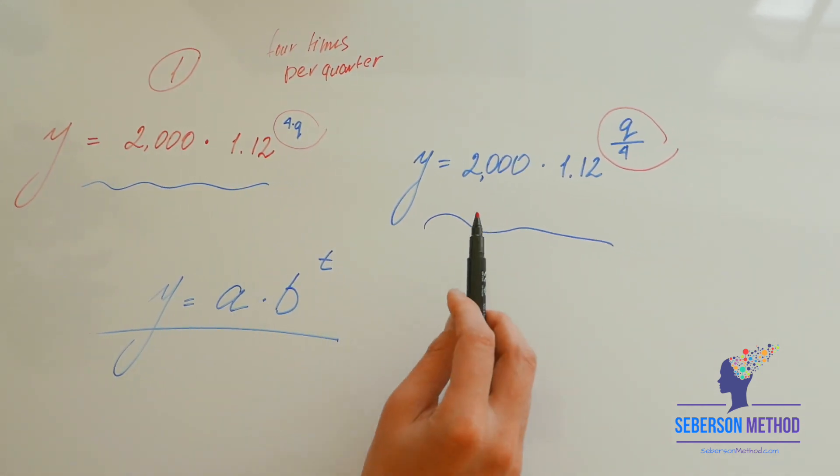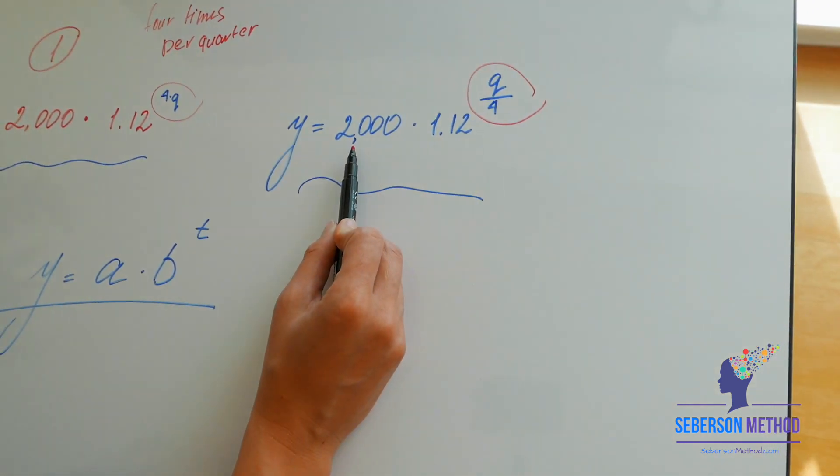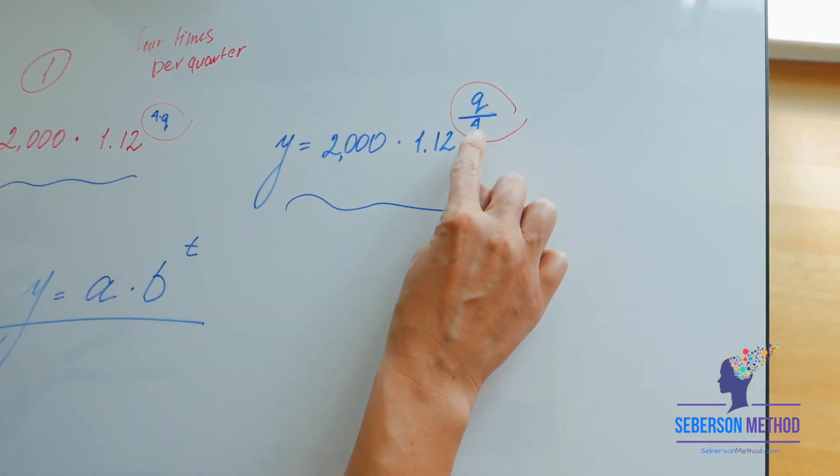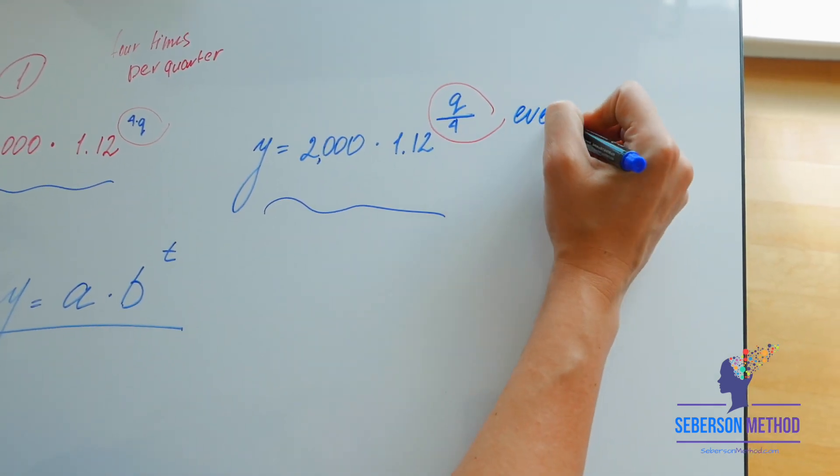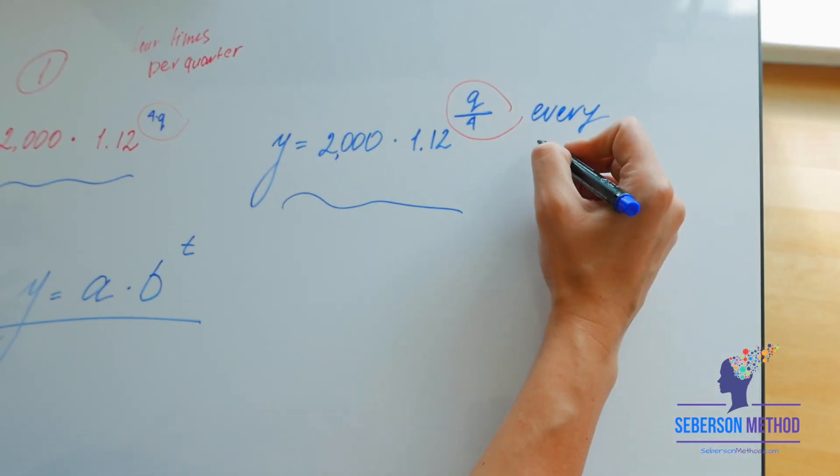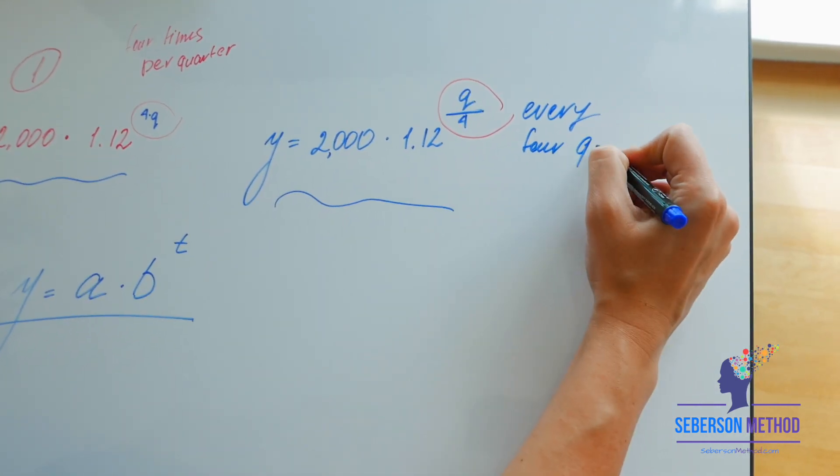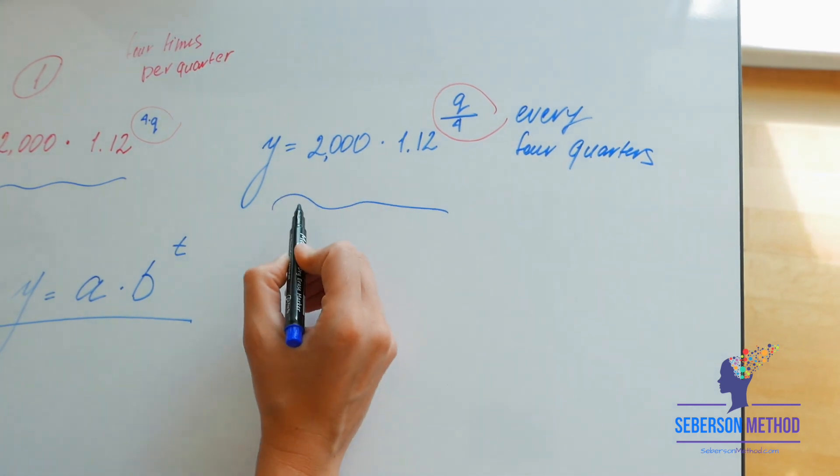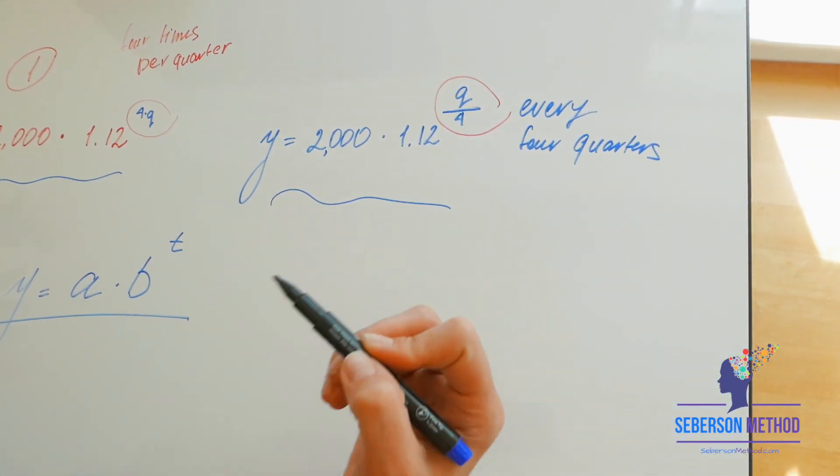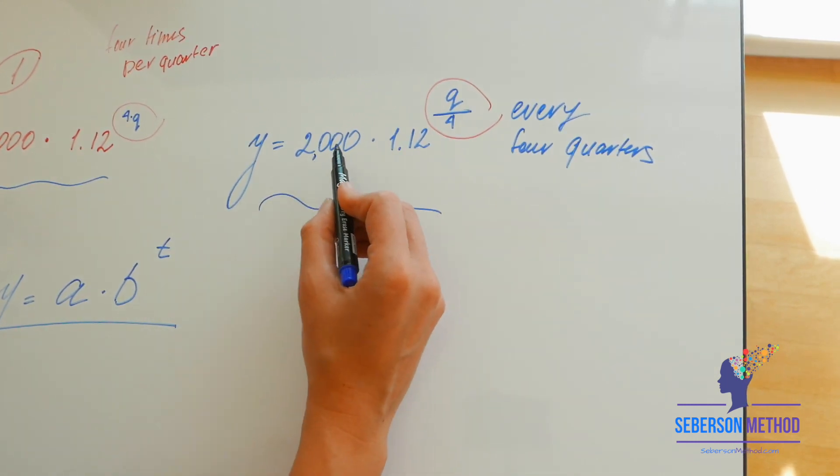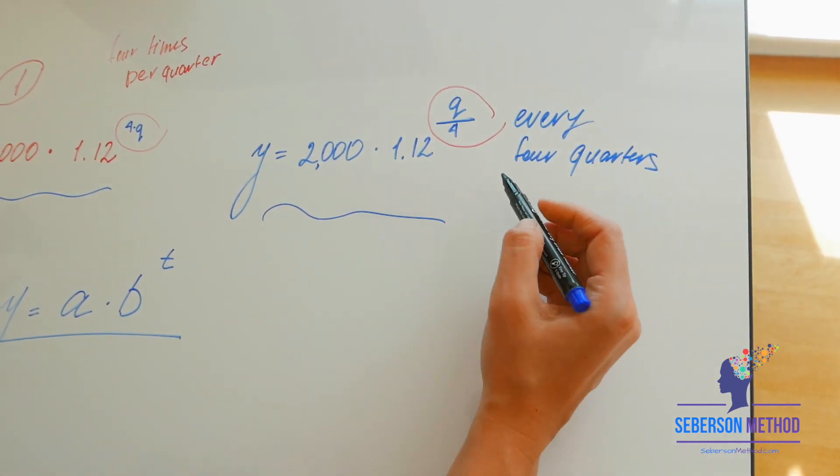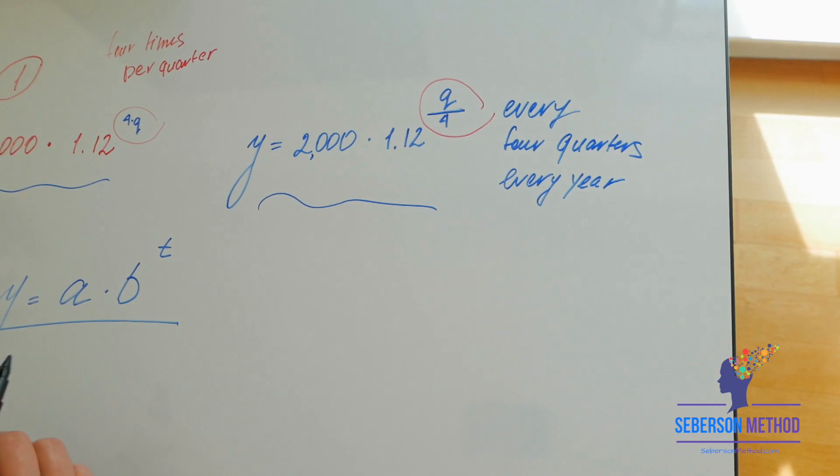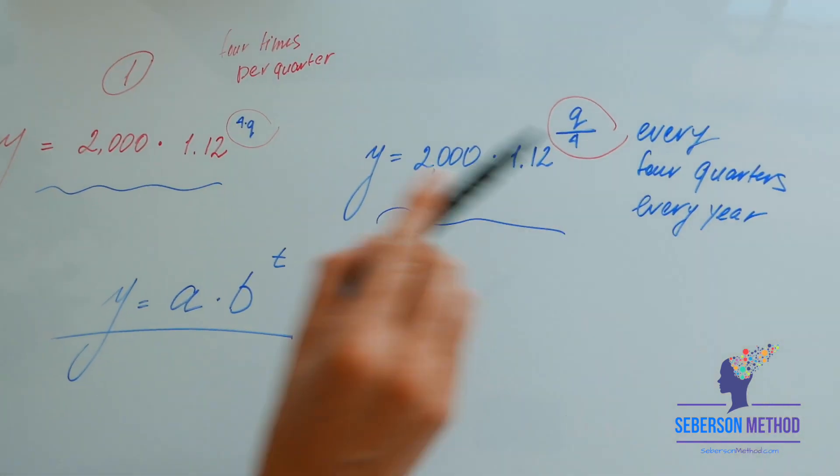Let's go over to the next example right here. Here we still have $2,000. We're still increasing the $2,000 by 12%. This line, you can think of it as every. Every four quarters, your money goes up by 12%. How many quarters are in a year? Four. So basically, what this says is that your money grows by 12% every year.